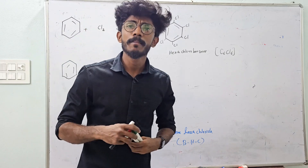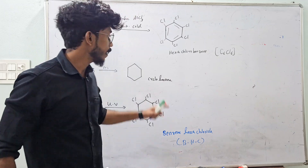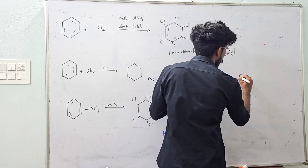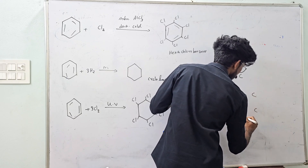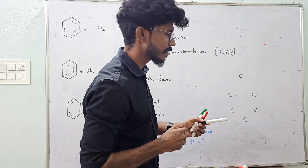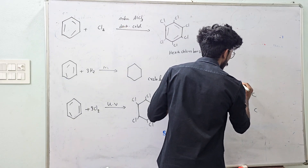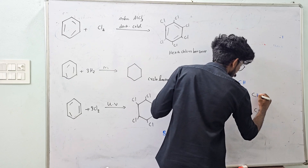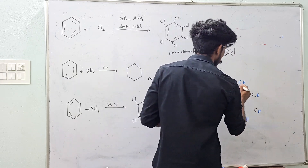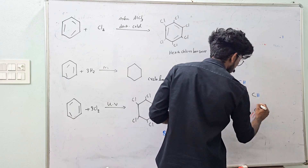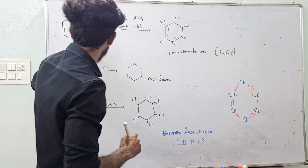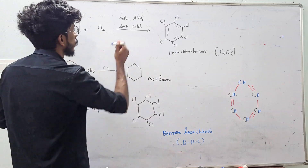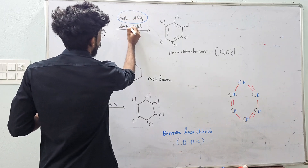I explained how benzene is structured — it is a 6-carbon ring with 6 hydrogens, alternating single bond and double bond. This is benzene. This benzene is chlorinated in the presence of Friedel-Crafts catalyst — anhydrous aluminium trichloride.